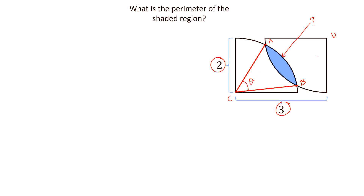Draw a line from A to C and from B to C, and let this angle be theta. If we can calculate angle theta, then we can find the length of this arc. Let this arc length be L, equal to R·theta. We need to calculate it two times, giving total perimeter equal to 2R·theta, where R equals 2.